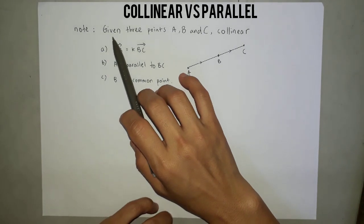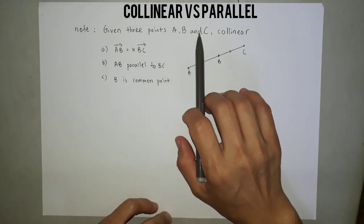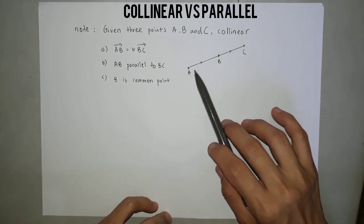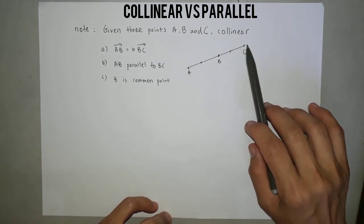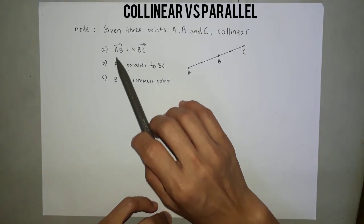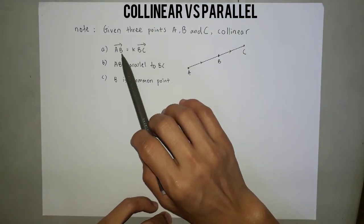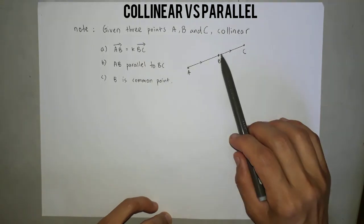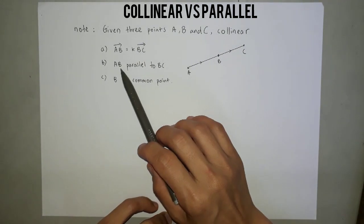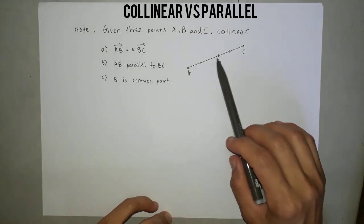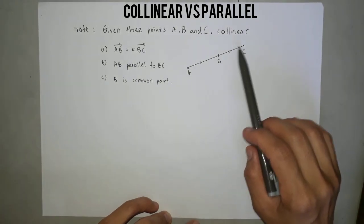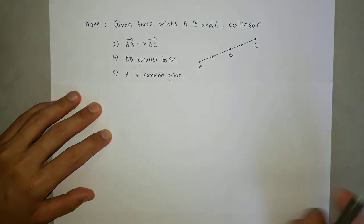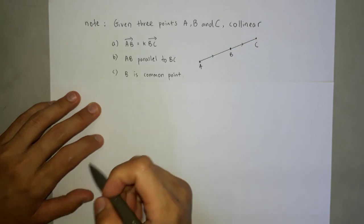If given three points A, B, C are collinear, collinear means they are in the straight line, they will have three conditions. Vector AB will be equal to k, a constant, BC. Then AB parallel to BC. B is common point.